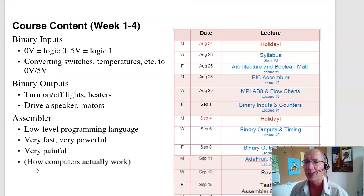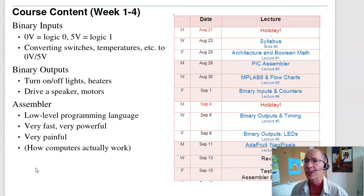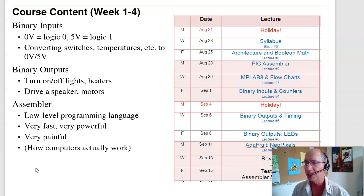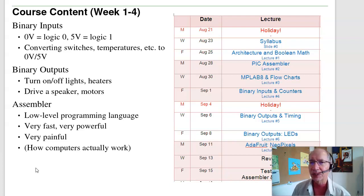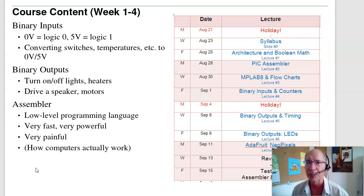In terms of the course content, we're going to start out in assembly. Assembly is the low-level programming on a microcontroller — it's where you have direct access to the inputs, direct access to the outputs, direct access to the registers. Assembly is very fast, very powerful, and very painful to use. That's how computers actually work. We'll also have binary inputs, where 0 volts is logic level 0 and 5 volts is logic level 1, and we'll convert switches, temperatures, things like that to binary inputs.